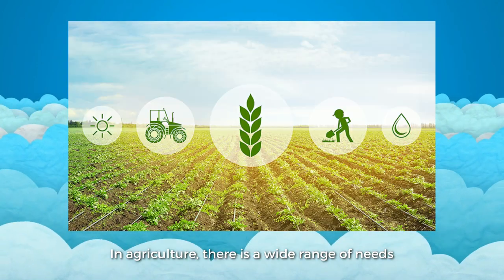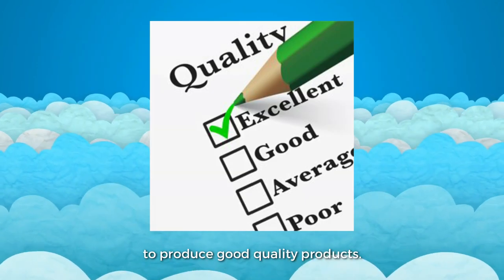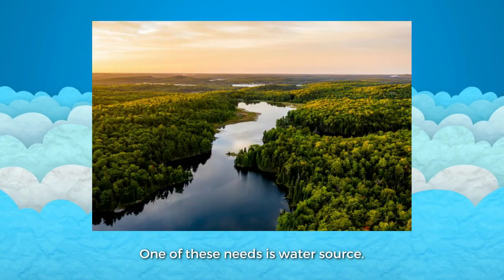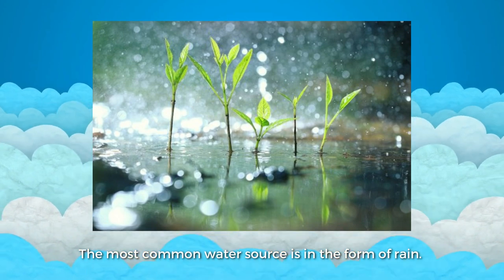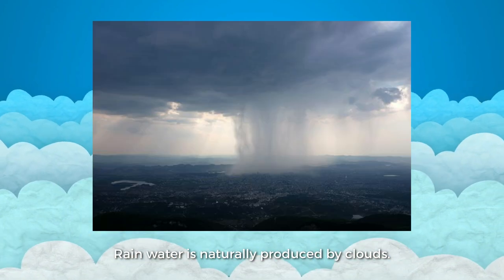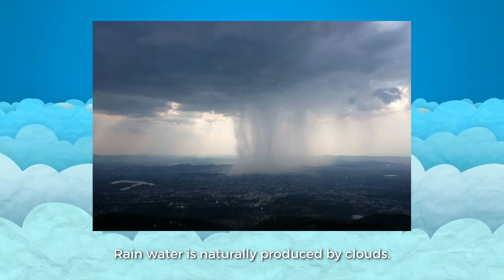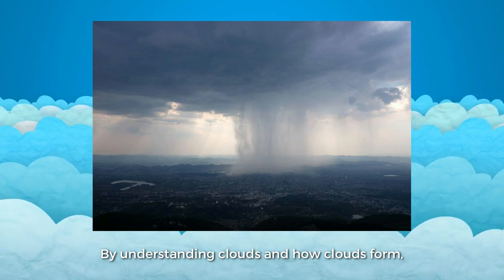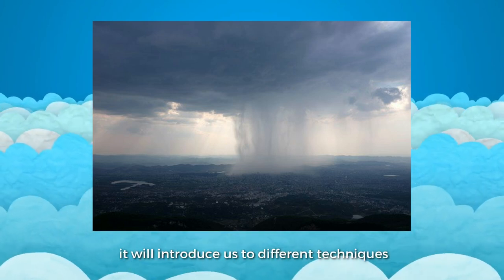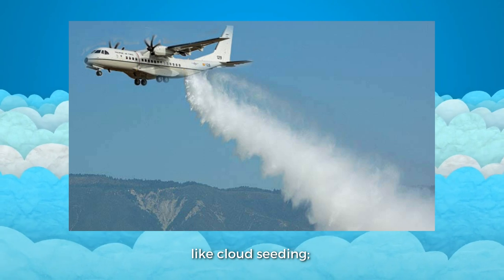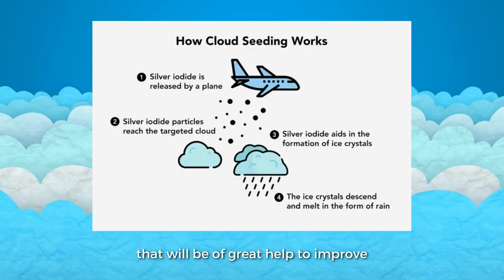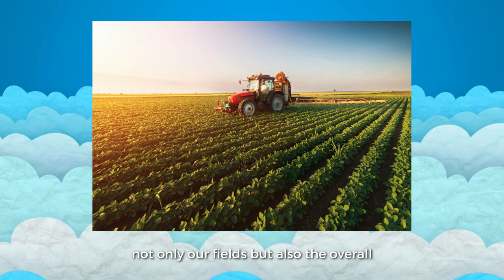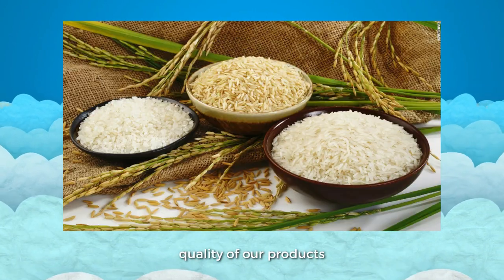In agriculture, there is a wide range of needs to produce good quality products. One of these needs is water source. The most common water source is in the form of rain, and rainwater is naturally produced by clouds. By understanding clouds and how clouds form, it will introduce us to different techniques like cloud seeding that will be of great help to improve not only our fields, but also the overall quality of our products.